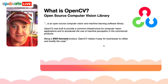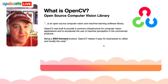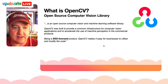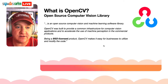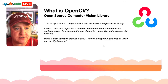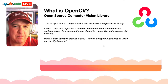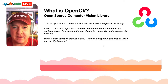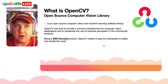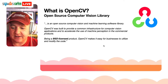OpenCV is an open source computer vision library. Their website describes it as an open source computer vision and machine learning software library, built to provide common infrastructure for computer vision applications and to accelerate machine perception in commercial products. Being a BSD-licensed product, OpenCV makes it easy for businesses to utilize and modify the code. BSD stands for Berkeley Standard Distribution.